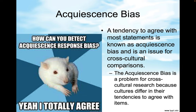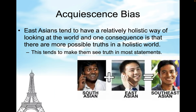A tendency to agree with most statements is known as acquiescence bias and is an issue for cross-cultural comparisons. The acquiescence bias is a problem for cross-cultural research because cultures differ in their tendencies to agree with items. East Asians tend to have a relatively holistic way of looking at the world, and one consequence is that there are more possible truths in a holistic world, which tends to make them see truth in almost all statements.